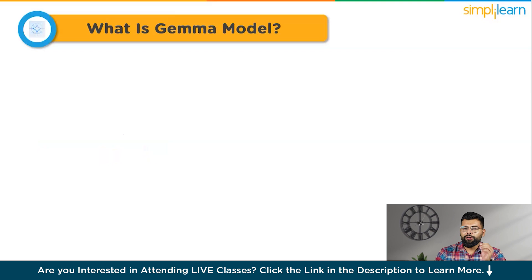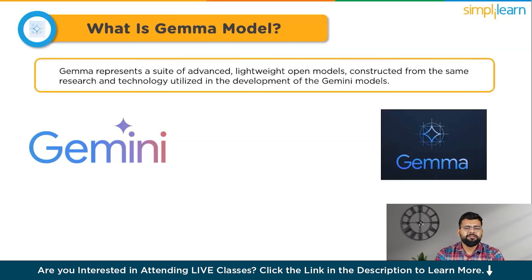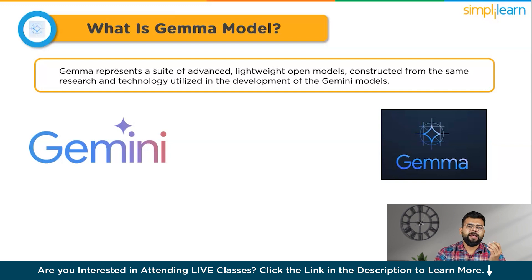Let's start with what is Gemma. Google recently introduced new models called Gemini. These models are big and meant for hard tasks. However, the newly launched Gemma is a small and lighter model. Its main purpose is to help developers build AI in a responsible way, following Google's AI rules.